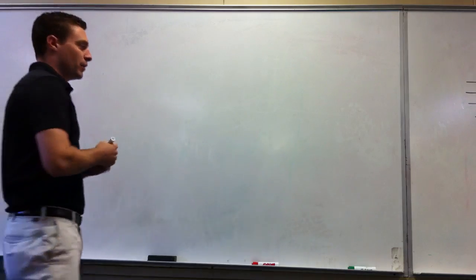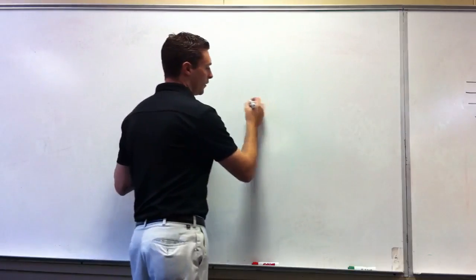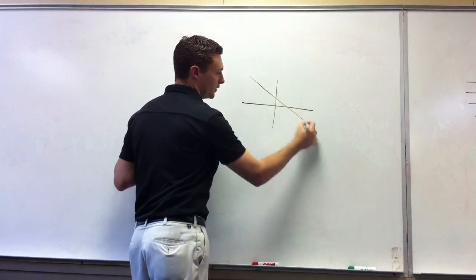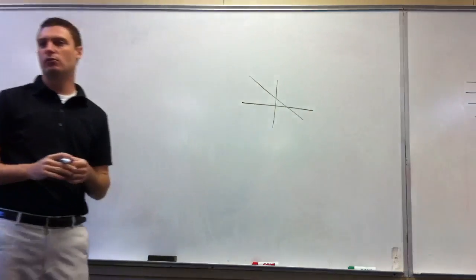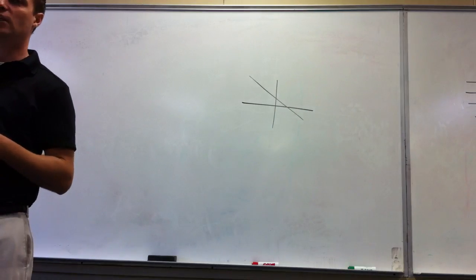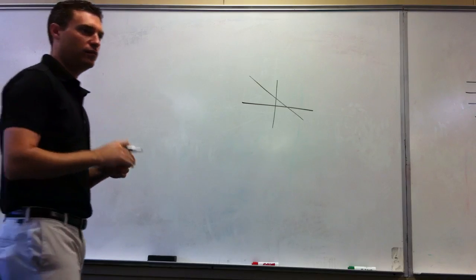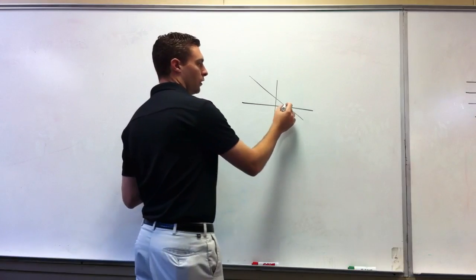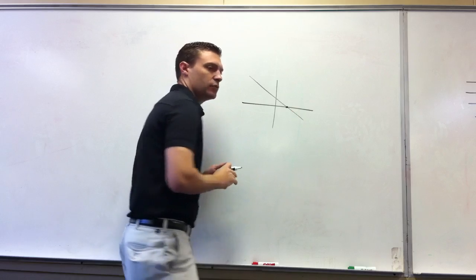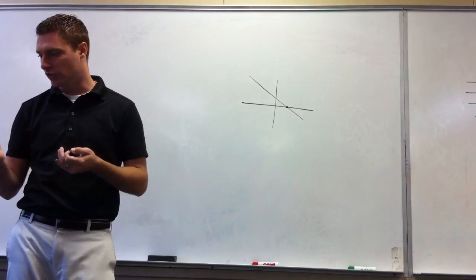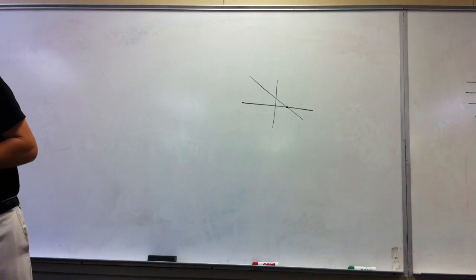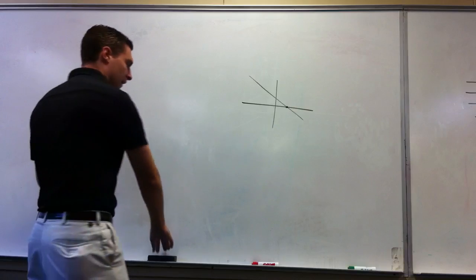Here's the principle: wherever a line crosses the x-axis, whatever the x-intercept is, is the solution of the equation. So wherever it crosses the x-axis is what your solution is. Let's look at an example.